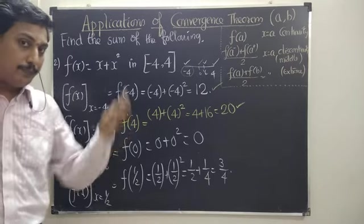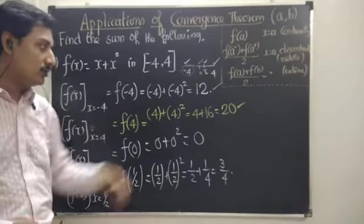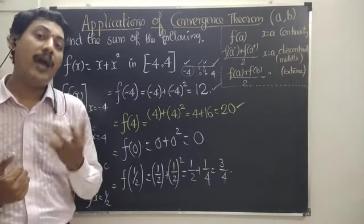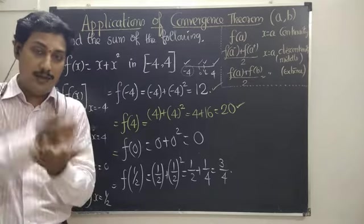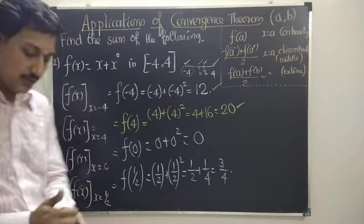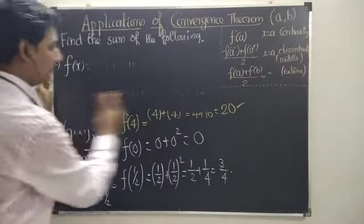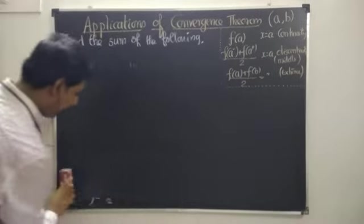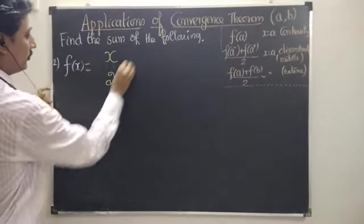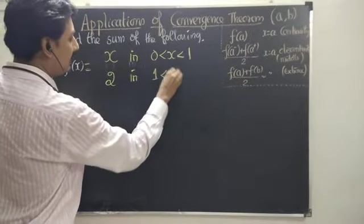So in the previous problem, we had an open interval, and this one is a closed interval. This time, even the extreme values and inside values give answers easily. Suppose when we have a point of discontinuity in the middle — see the third example, the third category. The third one is: f of x equals x in the interval 0 < x < 1, and f of x equals 2 in the interval 1 < x < 2.